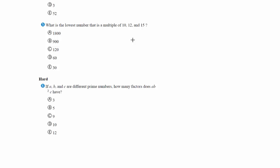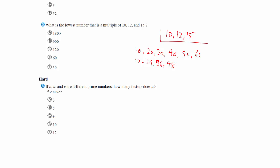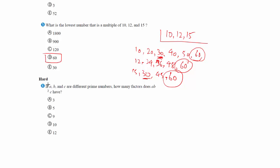What is the lowest number that is a multiple of 10, 12, and 15? We find the lowest common multiple. Multiples of 10: 10, 20, 30, 40, 50, 60. Multiples of 12: 12, 24, 36, 48, 60. Multiples of 15: 15, 30, 45, 60. The lowest number appearing in all three is 60.